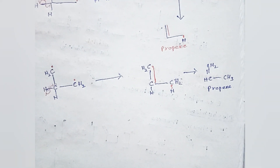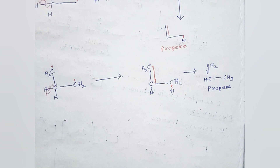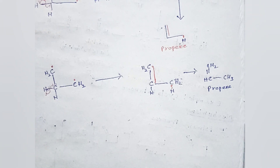These are the reactions of Norrish Type 1 reactions in carbonyl compounds — both in acyclic saturated carbonyl compounds and in cyclic carbonyl compounds. In our next video, we shall study advanced reactions of Norrish Type 1 reactions. Thanks for watching.